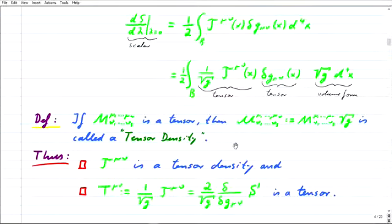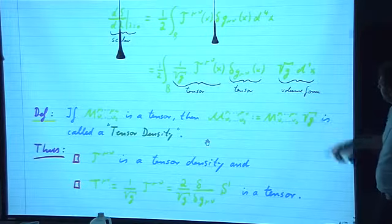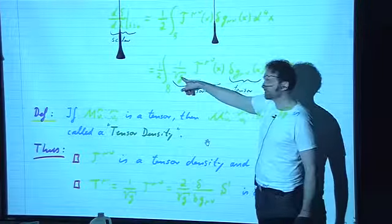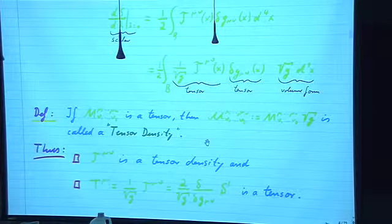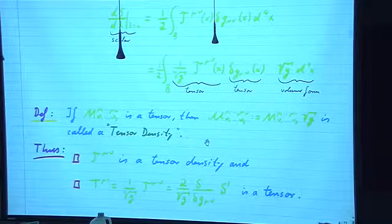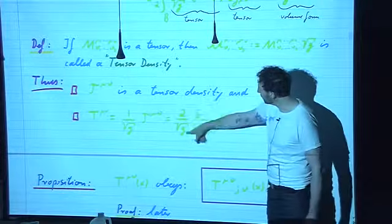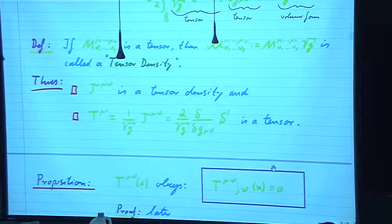We therefore introduce a definition: if M is a tensor, then a curly M defined as the tensor multiplied with sqrt(g) is called a tensor density. So you have to divide a tensor density by sqrt(g) to get an actual tensor. When we take τ^μν and divide it by sqrt(g), we obtain a tensor. And that tensor — 2 over sqrt(g) times the functional derivative of the action — will be called the energy-momentum tensor.